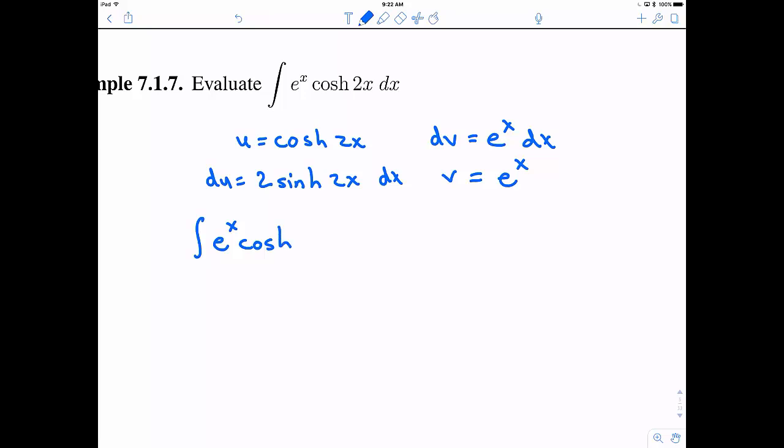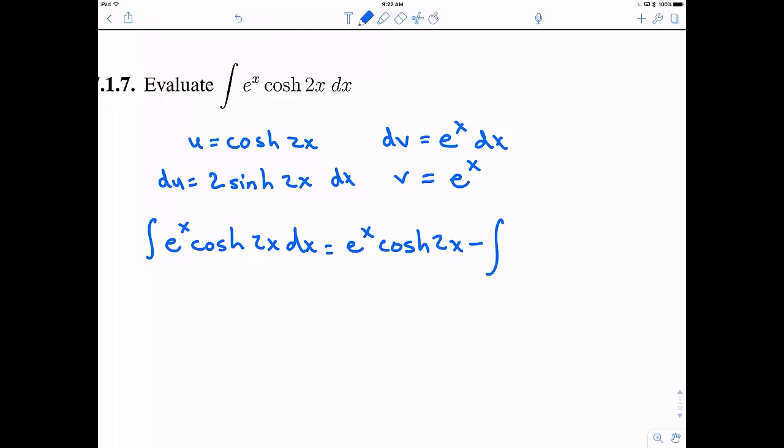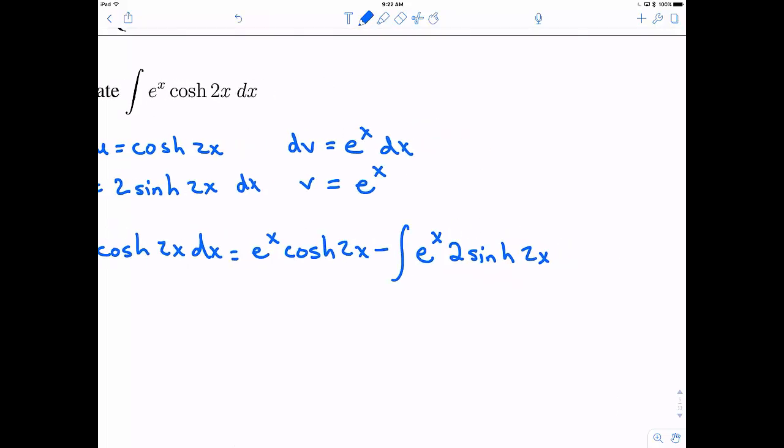So therefore according to integration by parts. This is going to be equal to uv. So let's see that's going to be e to the x hyperbolic cosine of 2x. Minus the integral of v du. So e to the x. And my du is 2 hyperbolic sine of 2x dx.